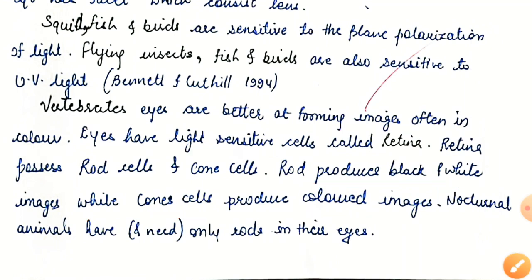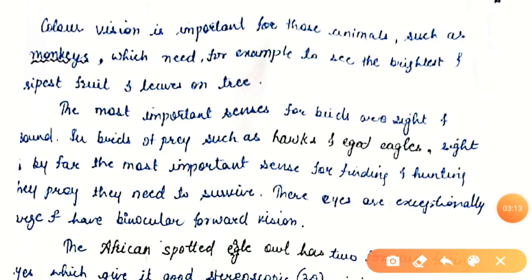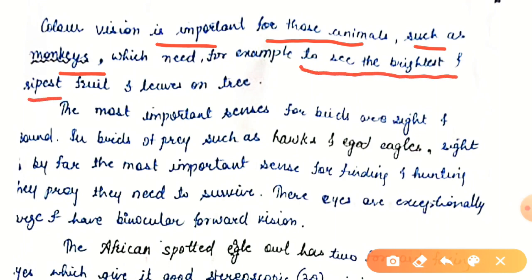Color vision is important for those animals such as monkeys which need, for example, to see the brightest and ripest fruit and leaves on a tree. Such animals need cone cells in their eyes, and color vision is important for them because they want to see the brightest and ripest fruits and leaves on the tree.